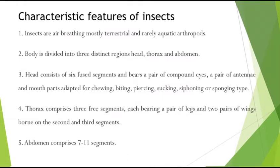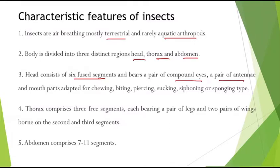Most insects are terrestrial, though there are rarely aquatic insects as well. The body is divided into three regions: head, thorax, and abdomen. The head has six segments and will have structures like compound eyes, antenna, and mouth parts.